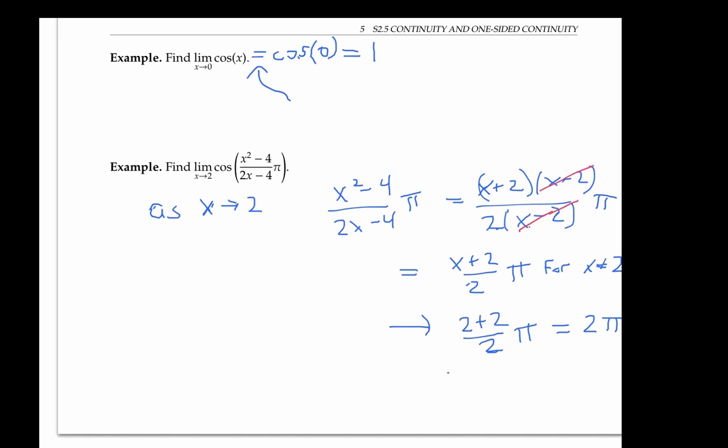In other words, the limit as x goes to 2 of x squared minus 4 over 2x minus 4 pi is just 2 pi.